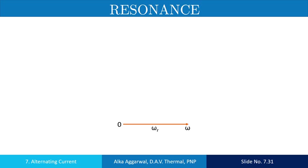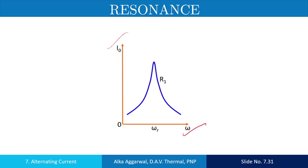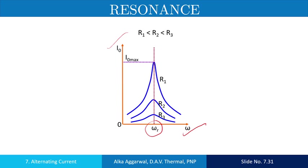This is a graph between the angular frequency and the current. The current is maximum at the resonant frequency. For resistance values R1, R2, and R3, the current amplitude decreases with the increase in the value of the resistor. So the effect of resistance on the maximum value of the current is clear.